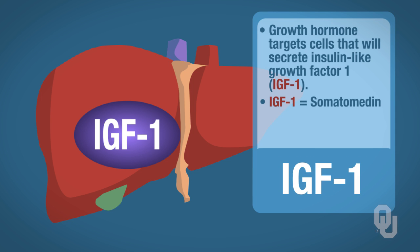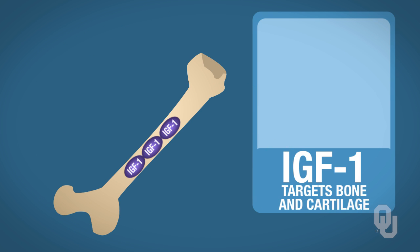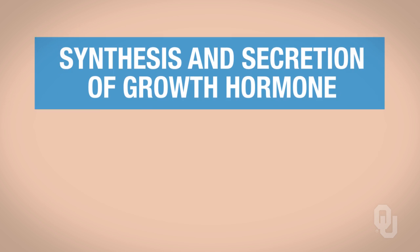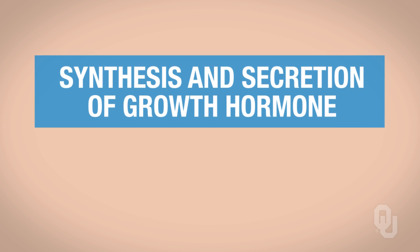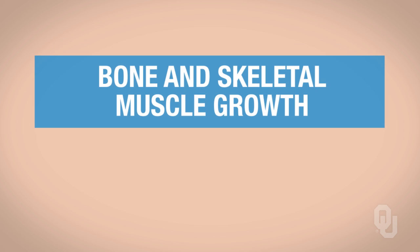Insulin-like growth factor one has two targets: bone and cartilage, and skeletal muscle. When IGF-1 targets bone and cartilage, it promotes cell division and bone growth. IGF-1 also targets skeletal muscle, which promotes protein synthesis and thereby promotes the growth of skeletal muscle. So by synthesizing and secreting growth hormone, and then IGF-1, we achieve both bone growth and skeletal muscle growth.